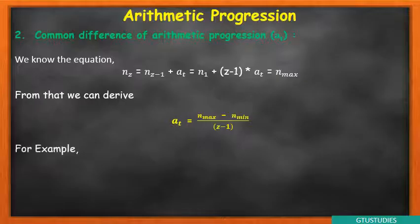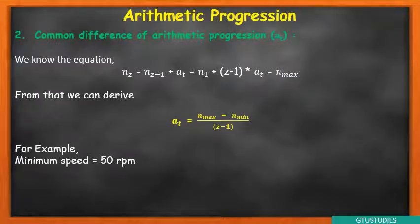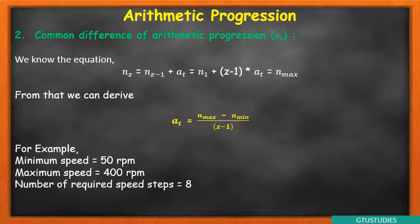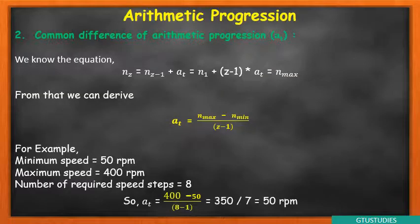For example, suppose minimum speed is 50 RPM, maximum speed is 400 RPM, and total number of steps is 8. AT equals 400 minus 50 divided by 8 minus 1, which equals 350 divided by 7, equals 50 RPM. So minimum speed is 50, second speed is 100, third is 150, fourth is 200, fifth 250, sixth 300, seventh 350, and eighth maximum speed is 400 RPM.